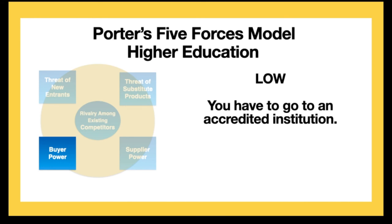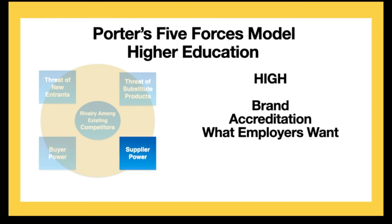Next, I would say buyer power is relatively low. You don't have a lot of choice as an undergraduate student of where you're going to go, because you have to go to an accredited institution. With that, supplier power is relatively high. There's great brand association within different states — you want to be a graduate from the University of Wisconsin-Madison and have that association. These institutions have accreditation from accrediting agencies, whether specialized or general, and that's also what employers want — they want to see that four-year or two-year degree from an accredited institution.